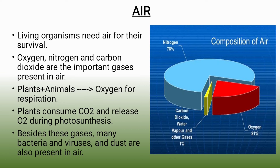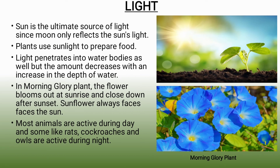The next abiotic factor is light. Light plays a very, very important role because the sun is the ultimate source of energy. The sun rises in the morning and sets in the evening — we know the sun is stationary and it is the earth which moves, but still we say sun rises and sets. Due to sunlight, the green plants are capable to prepare their own food.